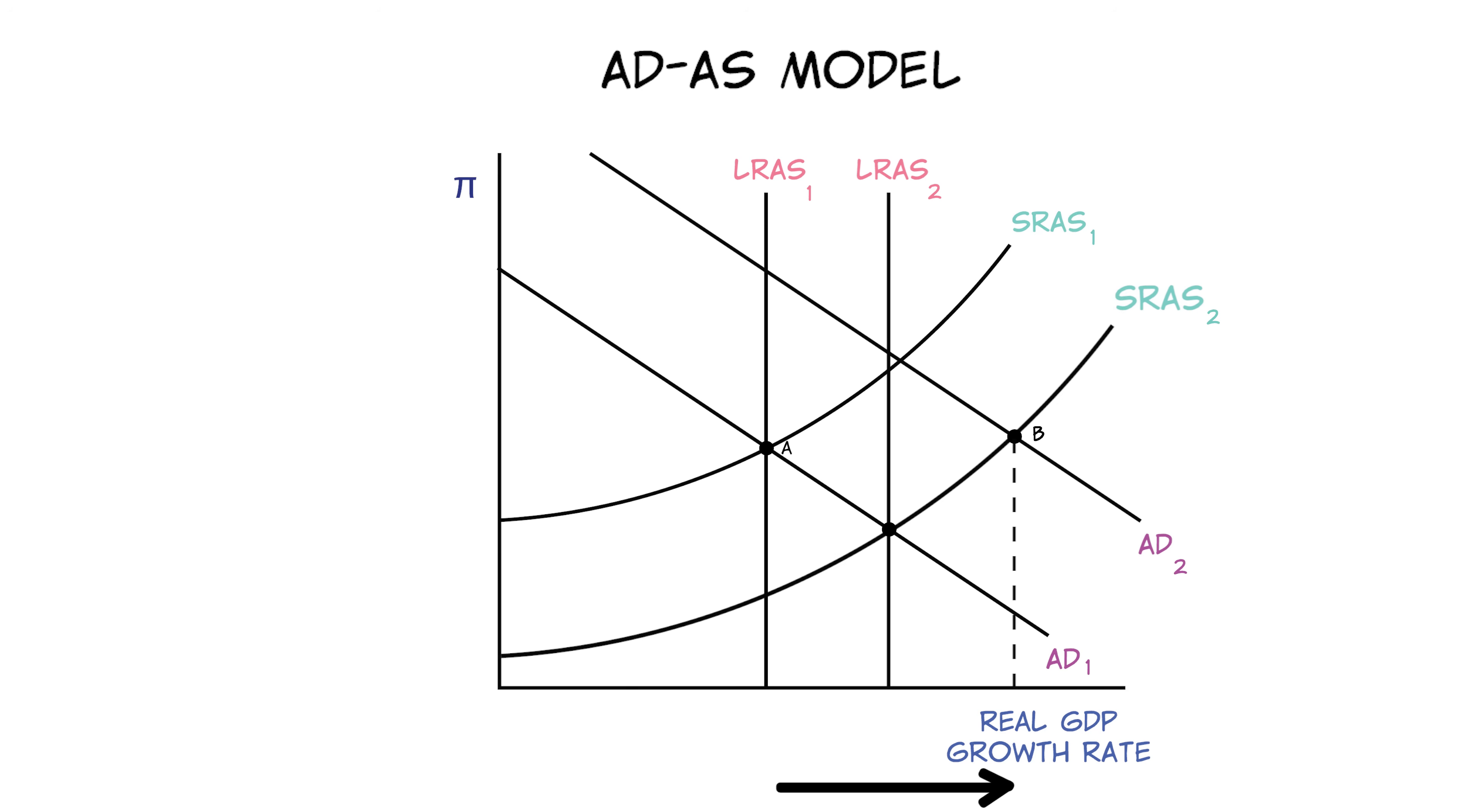Both shocks increase real GDP growth. But what happened to inflation in this instance? Well, that's ambiguous. Even though we've drawn our shifts such that inflation increased, we could have easily drawn it differently to show a decrease in inflation. The two events affect inflation in opposite directions, so the relative size and magnitude will ultimately determine whether the inflation increases or decreases or stays the same as the original equilibrium point.